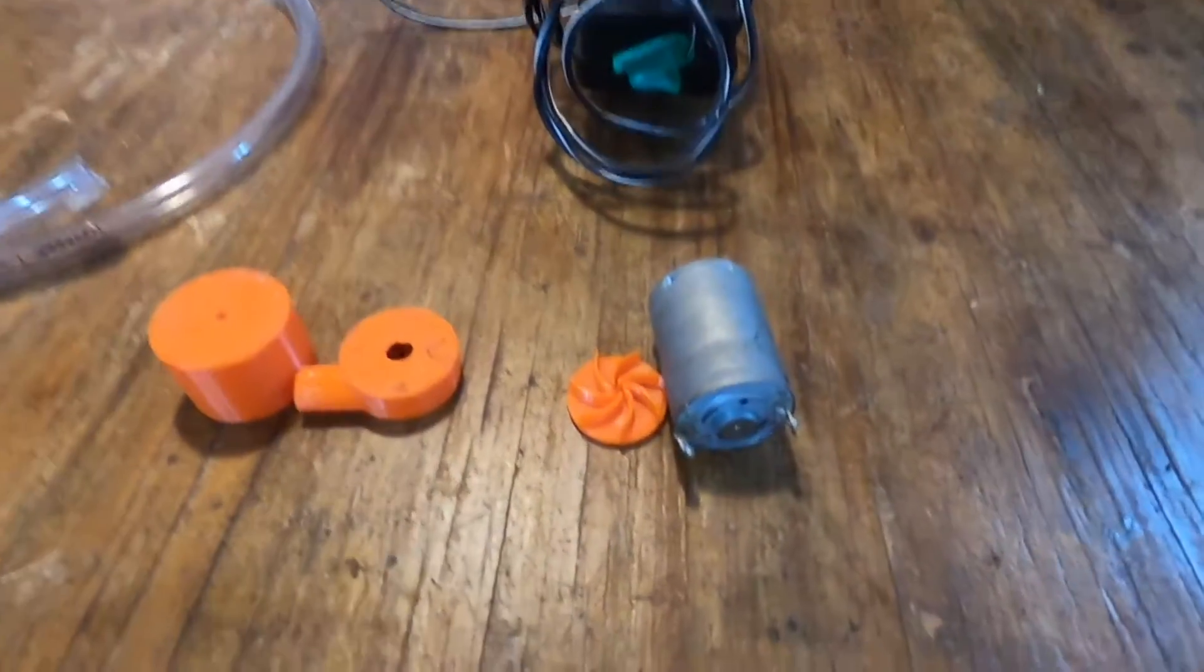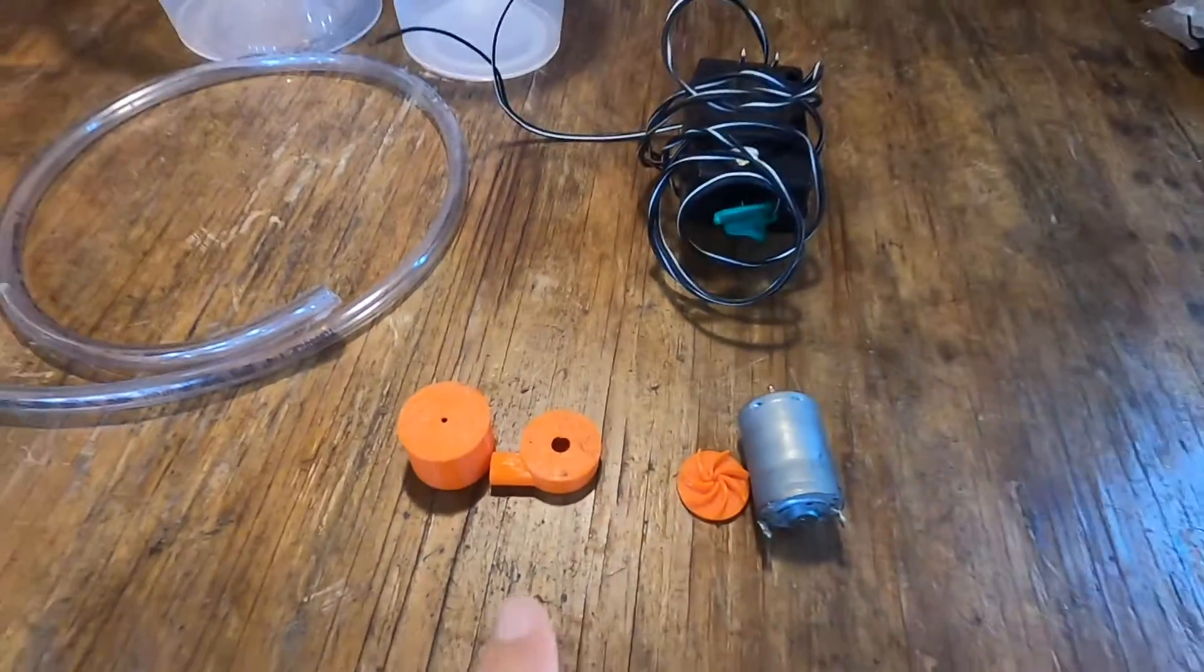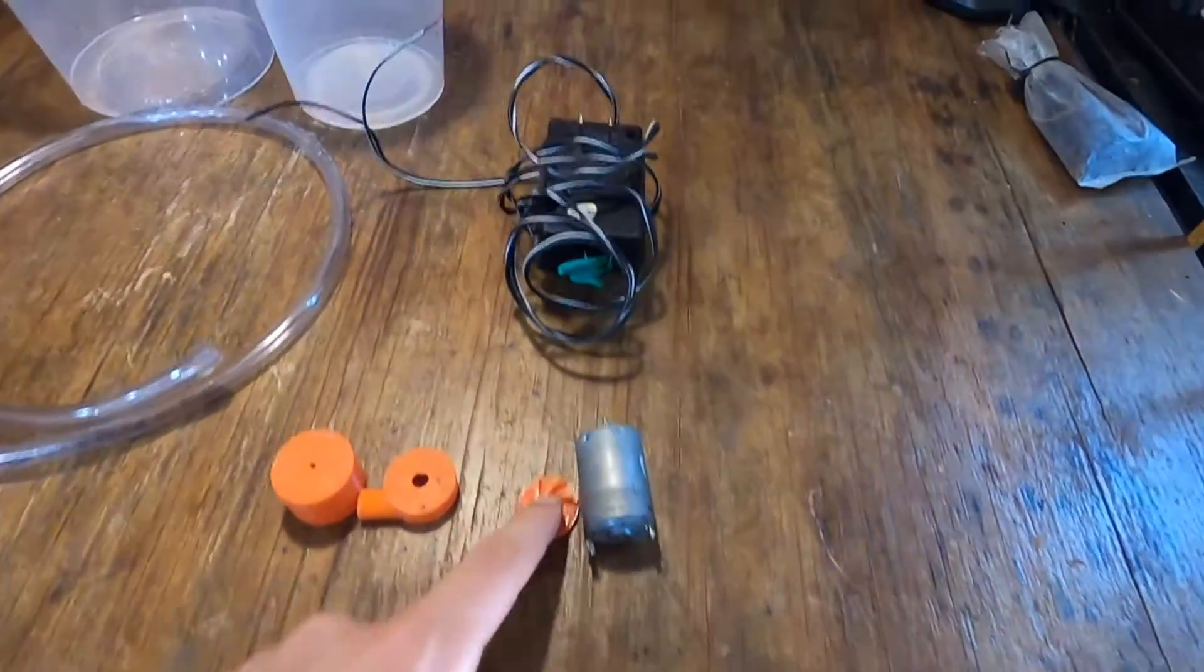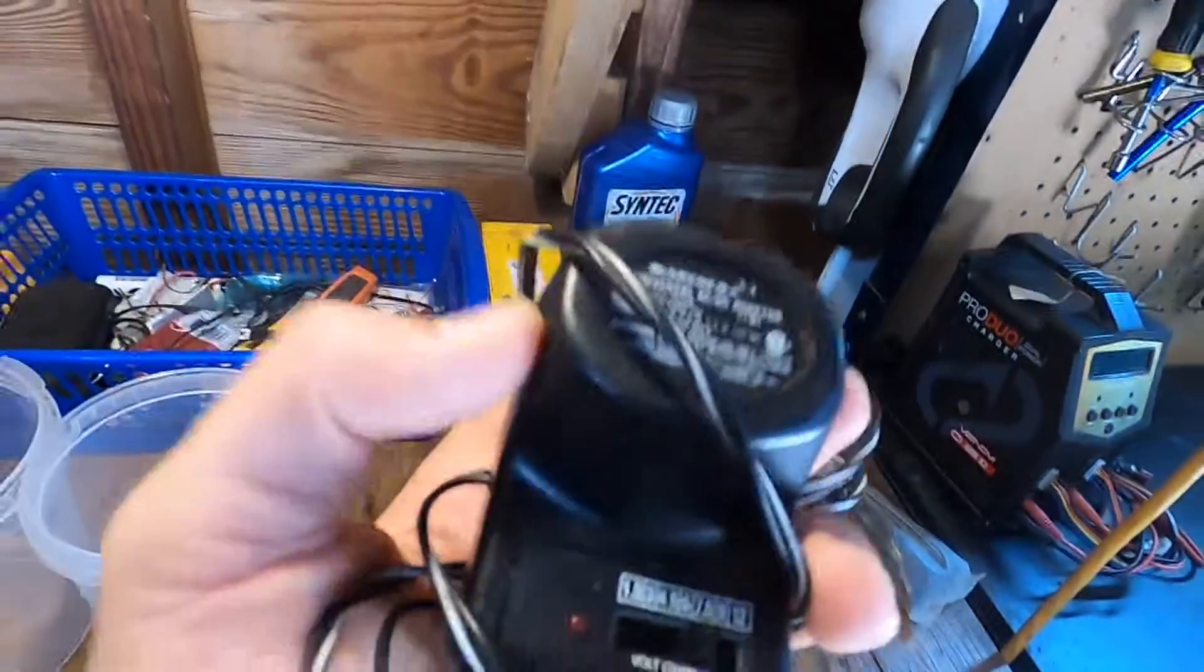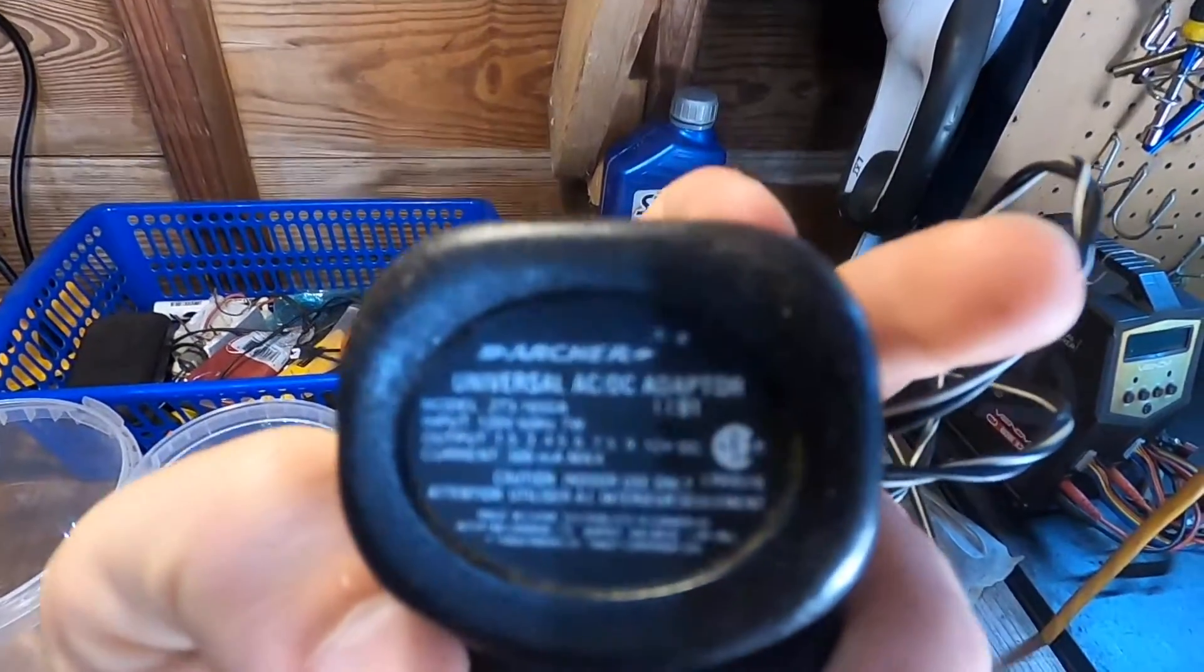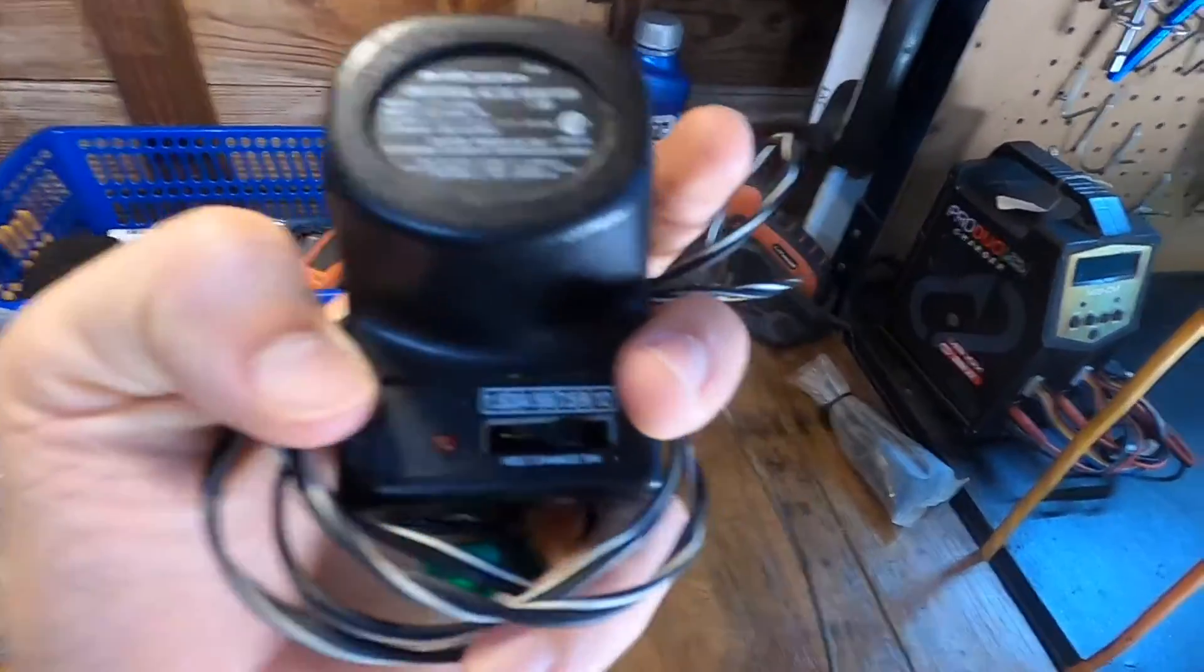And these are some of the parts that we have. These right here are for a 3D printed water pump. You can check that video on my YouTube channel. And we have this little plug here that goes into the wall and it converts AC current to DC.